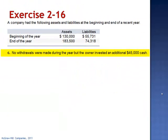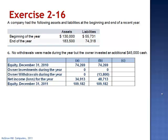Company C: the owner made no withdrawals during the year, but invested an additional $45,000 cash. Beginning equity is $74,269, plus $45,000 in investments, zero in withdrawals, and an ending equity balance of $109,182.